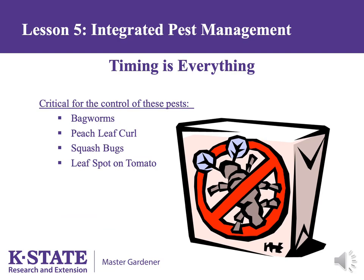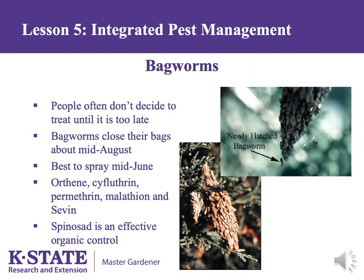Timing is especially critical for certain pests such as bagworms, peach leaf curl, squash bugs, and leaf spot on tomato. Bagworms are often not noticed until they cause extensive damage in August, but these insects often close their bags about mid-August and spraying will have no effect. The correct time to spray for bagworms is around mid-June. Waiting until mid-June ensures that all larvae have left the bag and are susceptible to the spray. Spinosad is an organic control that is very effective against bagworms.